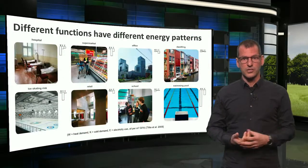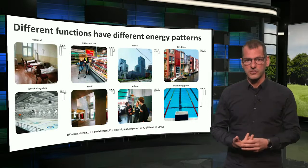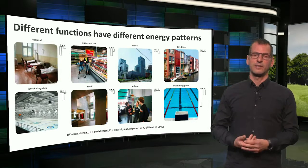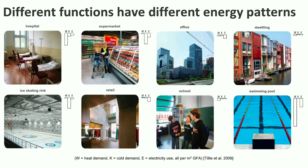This starts with the notion that the city accommodates many different urban functions, which all have different energy patterns. Here we see eight different functions and their energy patterns for heat (W), cold (K), and electricity (E). As you may see, the energy demands per square meter differ a lot — some buildings use a lot of heat, others more cold. What we teach you in this course is basically how to make a single building energy neutral, but in an urban context it might be smarter to attune the different functions, make use of excesses and shortages, and to exchange heat between buildings.